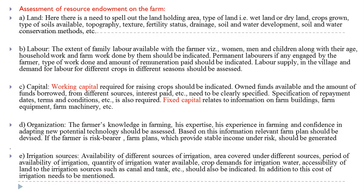Resource endowments include: land — the type of land available; labor availability; and capital, which has two parts — working capital and fixed capital. Fixed capital is related to fixed assets such as buildings, equipment, and farm machinery.